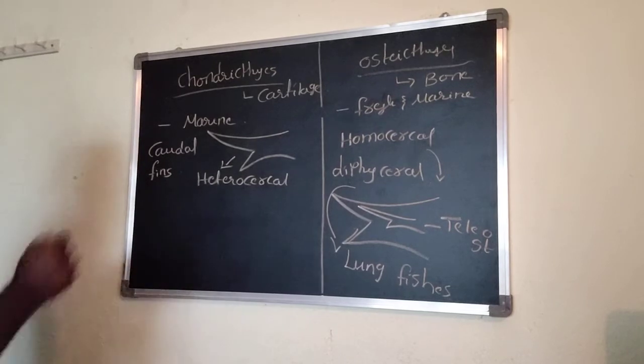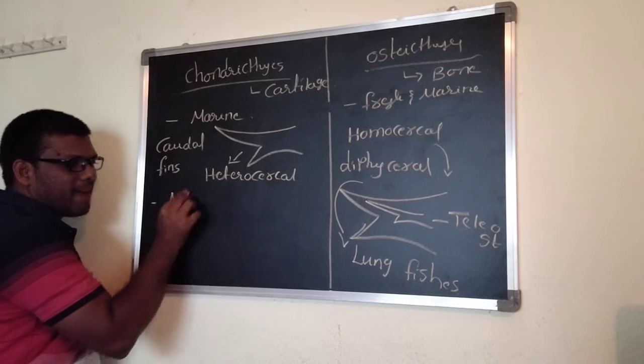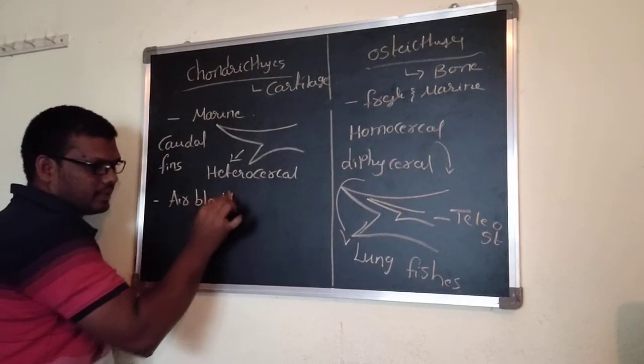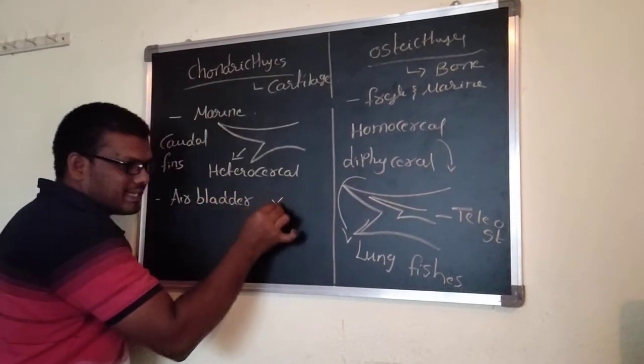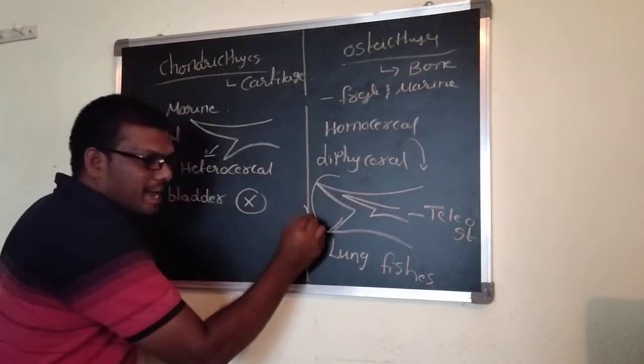This is the main differentiation. Air bladder is absent in Chondrichthyes. If you observe Osteichthyes, air bladder is present.